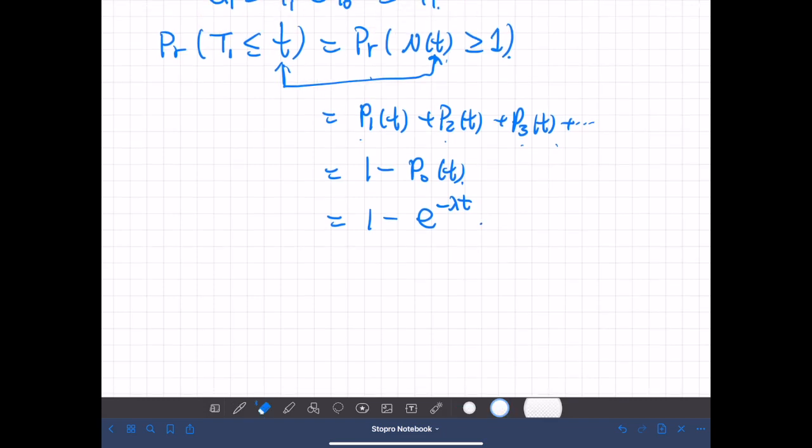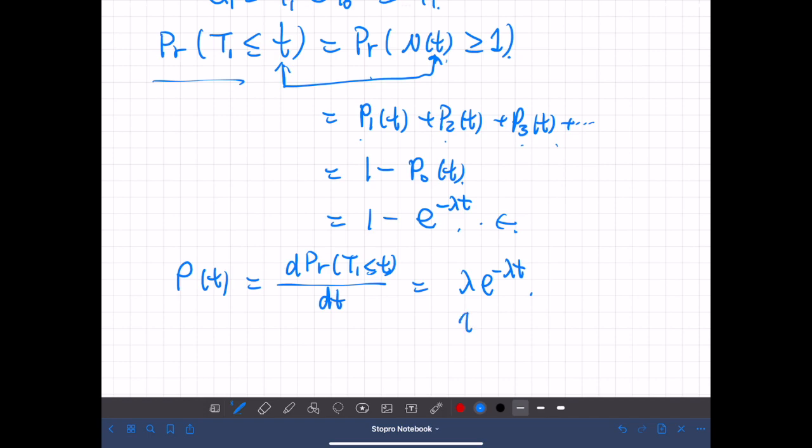But if you notice, this is the cumulative distribution function of the exponential distribution. So in fact, if you differentiate this cumulative distribution function, then we get the density function. So if you differentiate this, we have lambda exponential of negative lambda t. This is exponential distribution.